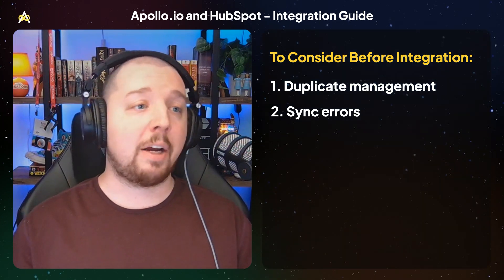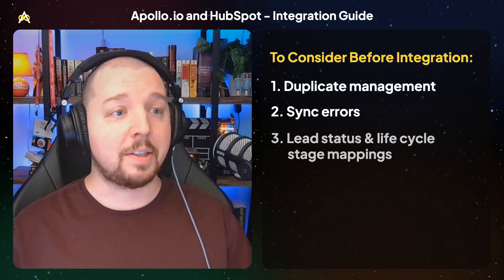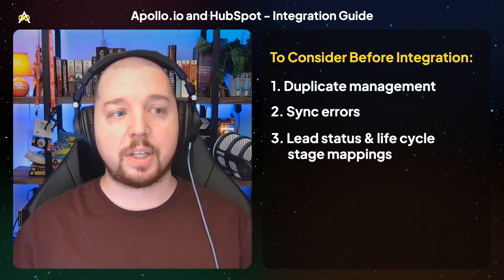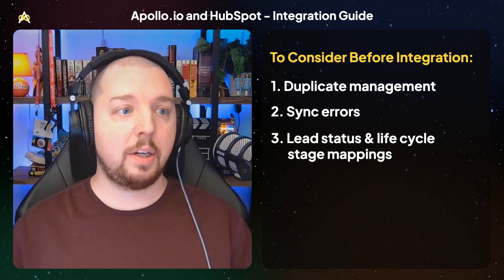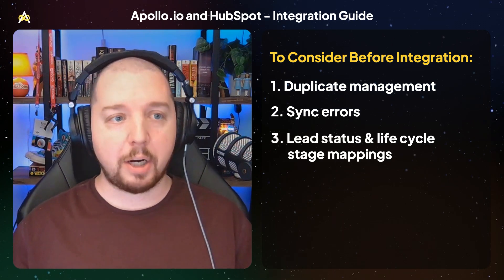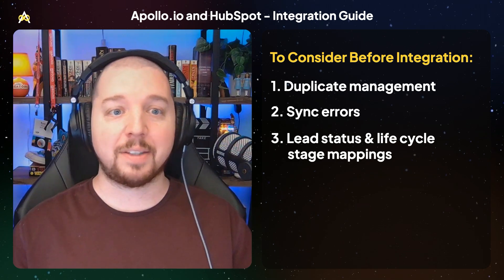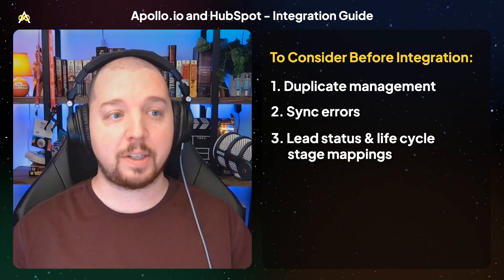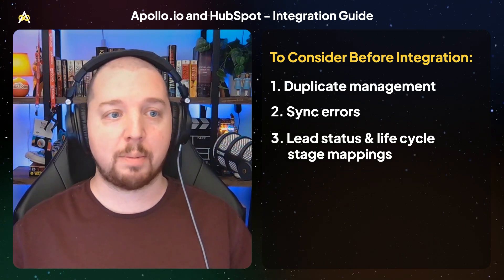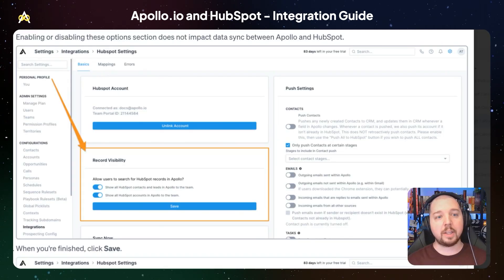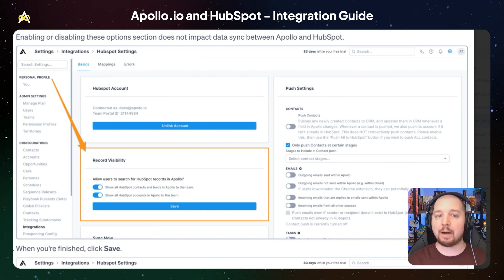Another thing to keep an eye out for is lead status and lifecycle stage mappings. If you're using Apollo for prospecting, you may have noticed that it has different lead status and lifecycle stage options than HubSpot does. Within the integration settings in Apollo, you can find mappings for these properties and customize them to fit how your business operates.